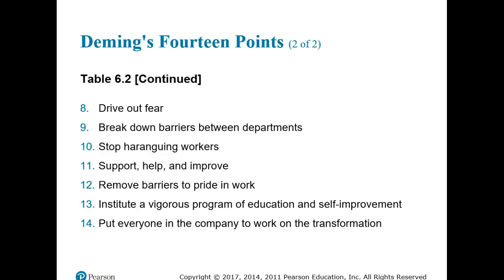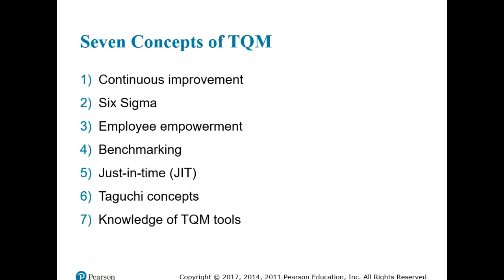The textbook developed Deming's 14 points into seven concepts for an effective TQM program: (1) continuous improvement, (2) Six Sigma, (3) employee empowerment, (4) benchmarking, (5) just-in-time (JIT), (6) the Taguchi concepts, and (7) knowledge of TQM tools.